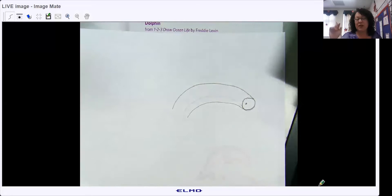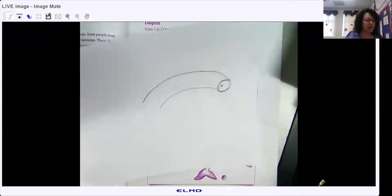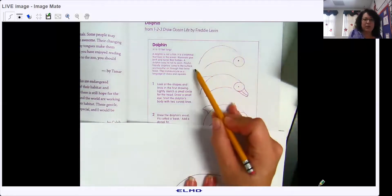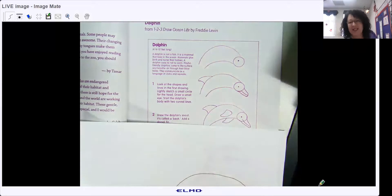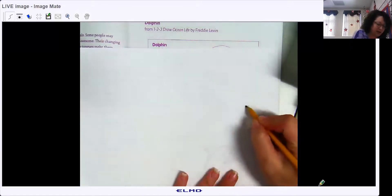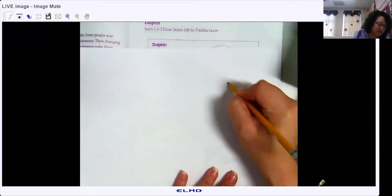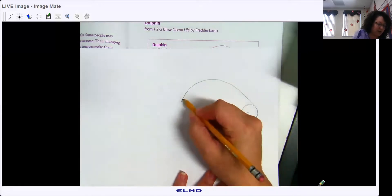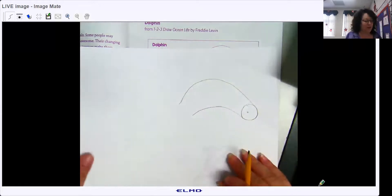And if you mess up, guess what? You can erase or you can just turn your paper over and do it on the back, which I'm going to do because I don't like that. It looks like a worm. I like how on theirs, it's humped over a little bit more. Mine looks like a worm. So I'm going to redo mine. I don't like it, but it's better than the first one.